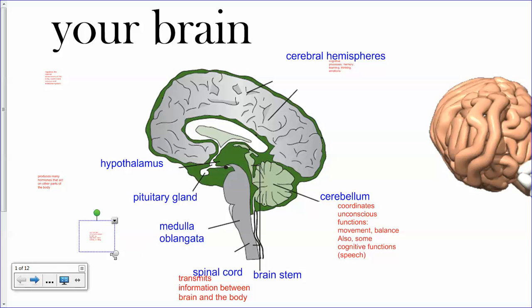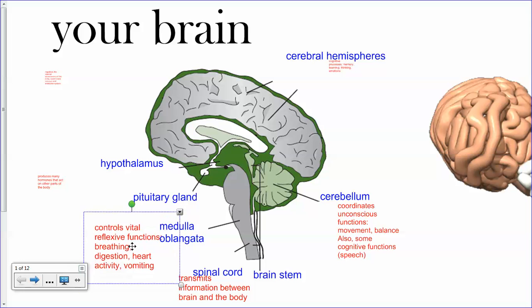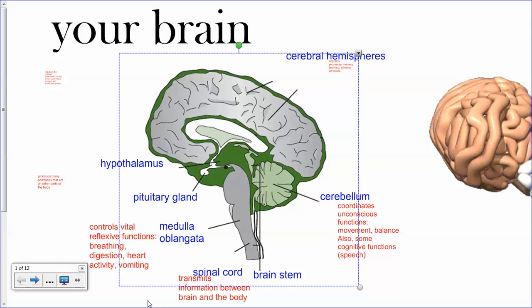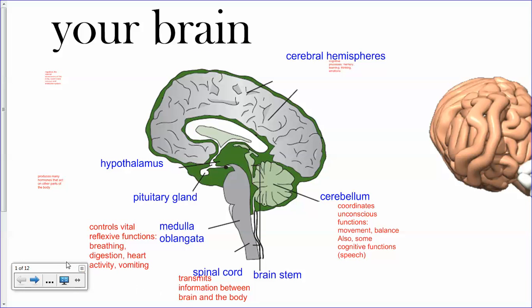Let's look at the medulla oblongata — it controls some vital reflexive functions. Vomiting, which is horrible, but your body is trying to help you get rid of some stuff, so trust your vital reflexive functions. Also breathing, digestion, and heart activity.